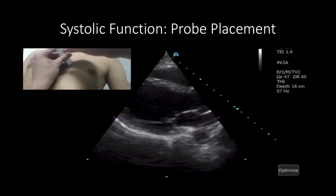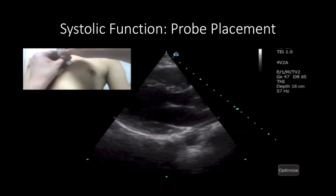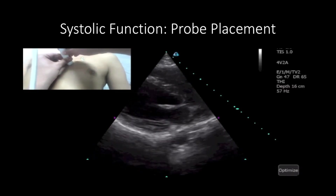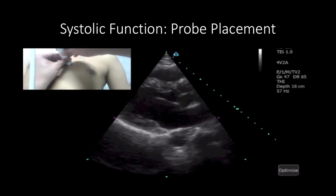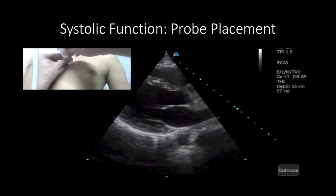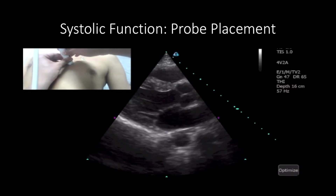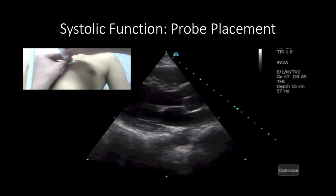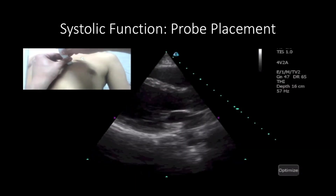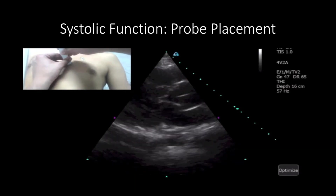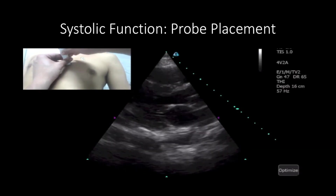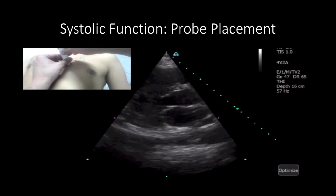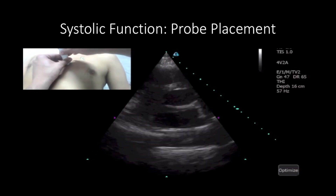For the assessment of systolic function, we want to be in the parasternal long axis view. To obtain this view, place the phased array probe on the left border of the sternum at intercostal space 3 or 4. The marker on the probe should be pointing towards the patient's left elbow.